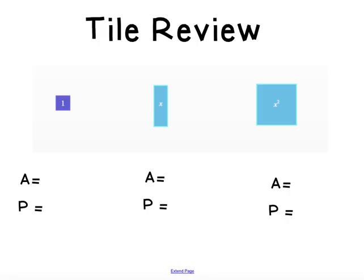First, we're going to do a quick tile review. Since we're talking about area with our tile names, I'm going to start by doing the area of our basic tiles. This is the unit tile — the area is 1. This is our x tile — the area is x. And this is our x squared tile — the area is x squared.